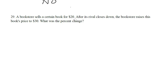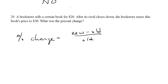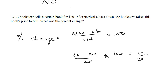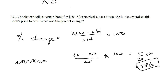Question 29: A bookstore sells a book for $20. After its rival closes down, the price is raised to $30. What was the percent change? The percent change formula is: new minus old, divided by old, times 100. So that's 30 minus 20, over 20, times 100 — which is 10 over 20 times 100, giving us 50%. The answer is a 50% increase.